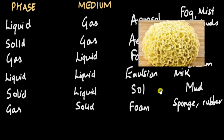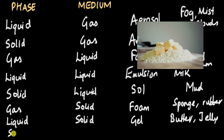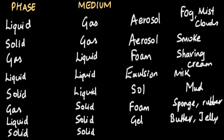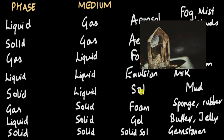Now if the dispersing phase is liquid and the dispersing medium is solid, you can get substances like butter or jelly. This is called a gel. Finally, if both the dispersing phase and dispersing medium are solid, you get something like a gemstone — solid solute-like particles suspended in a solid medium. This type of colloid is called a solid sol. These are all the different types of colloids you can see around you.